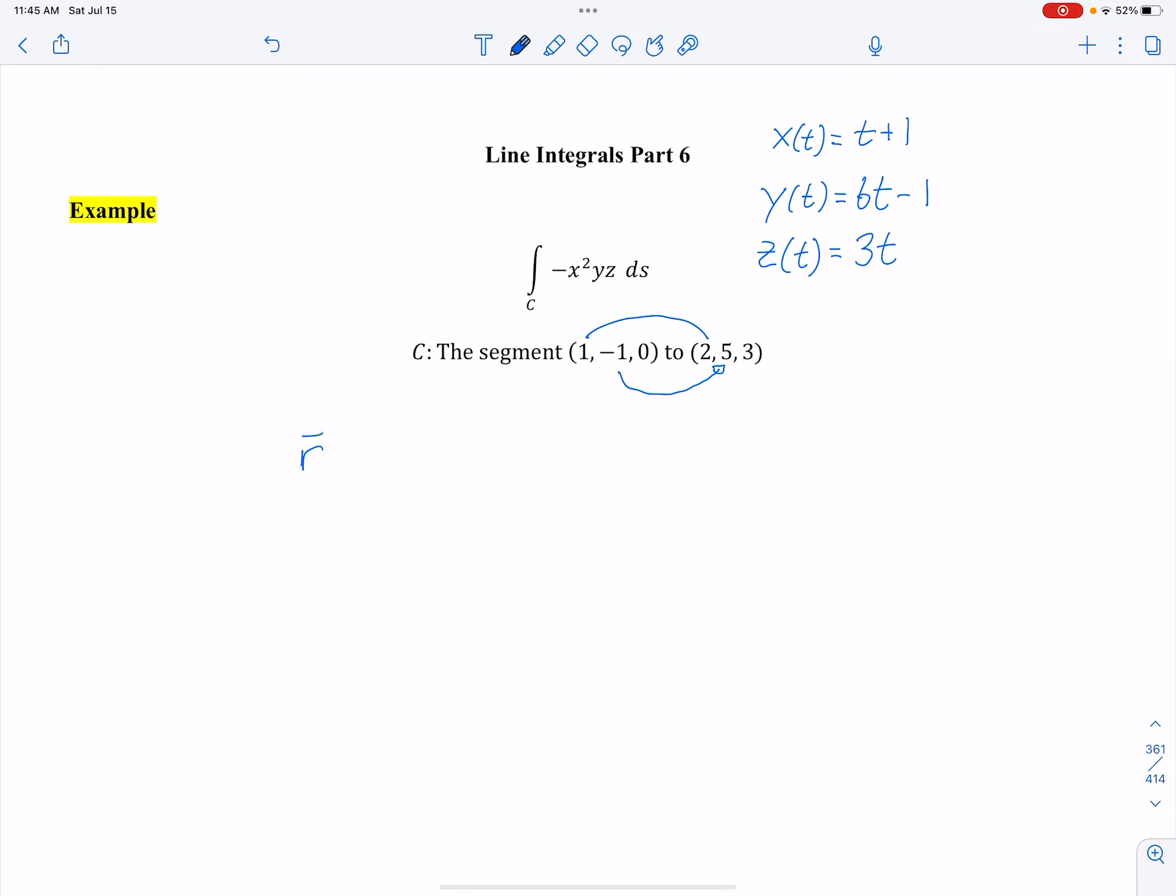So I have my path now. My path is t plus 1, 6t minus 1, and 3t. Using our definition, let me paste that here.